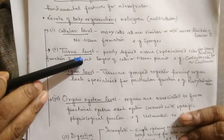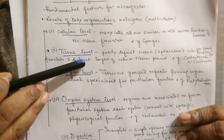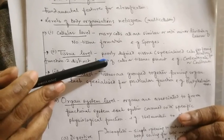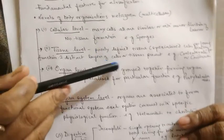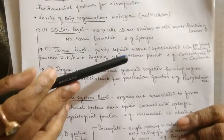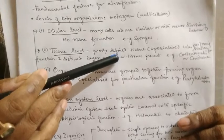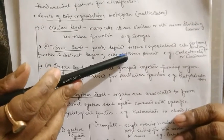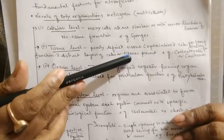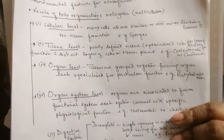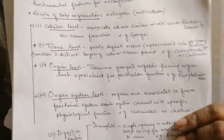Next is the tissue level of organization, where the cells have specialized functions and this group of specialized cells with specialized functions form tissues. To some extent, division of labor is there as specialization in function is there. This tissue level of organization we find in Coelenterata.